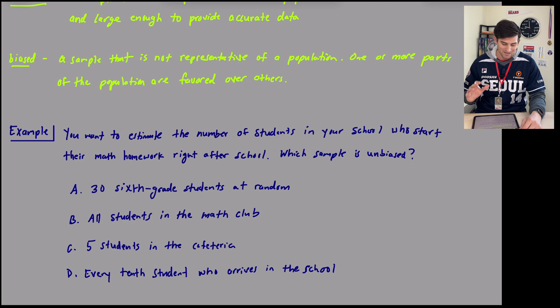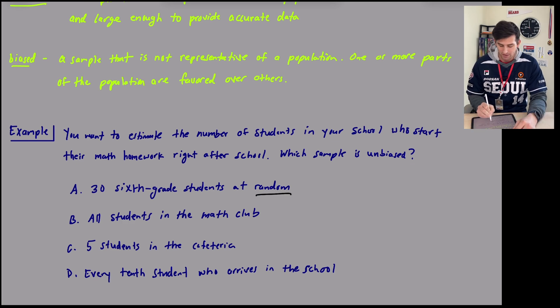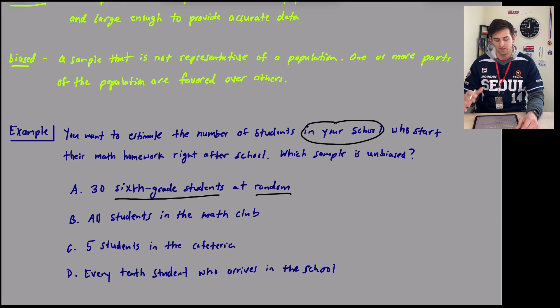First of all, option one is 30 sixth-grade students at random. We do see the word random here, which is a good indication. However, it's just sixth grade students. So if we're wanting to find out in our school how many students start their math homework right after school, only asking students from one grade would not yield a good result. So we would not want to choose option A.